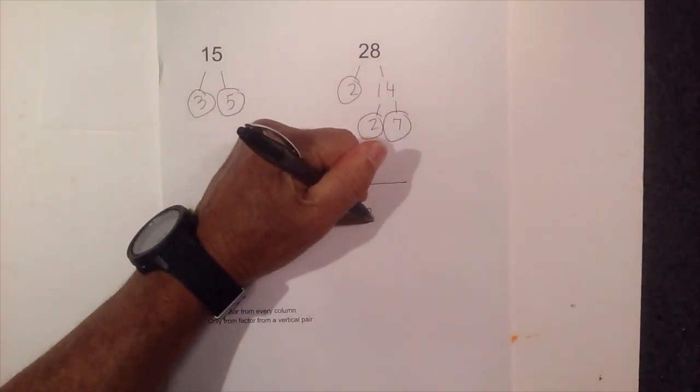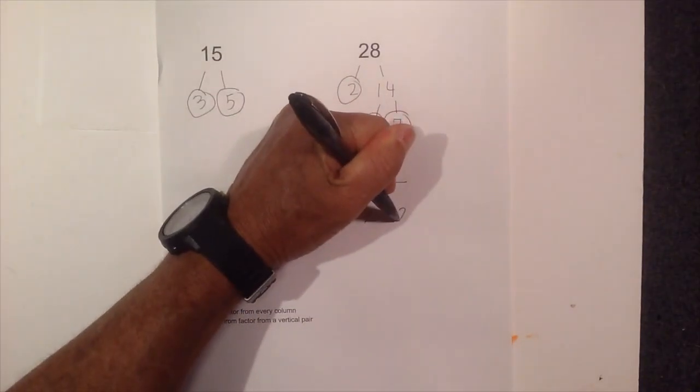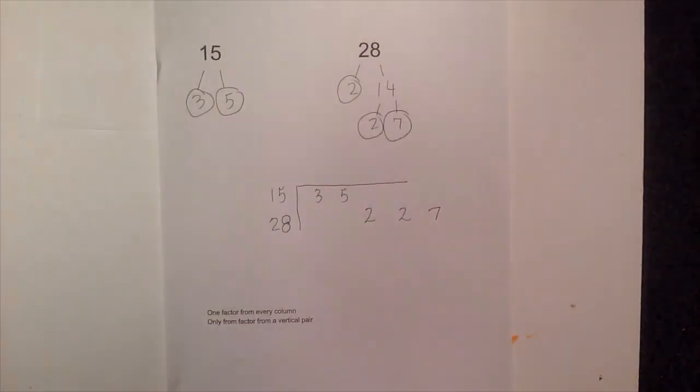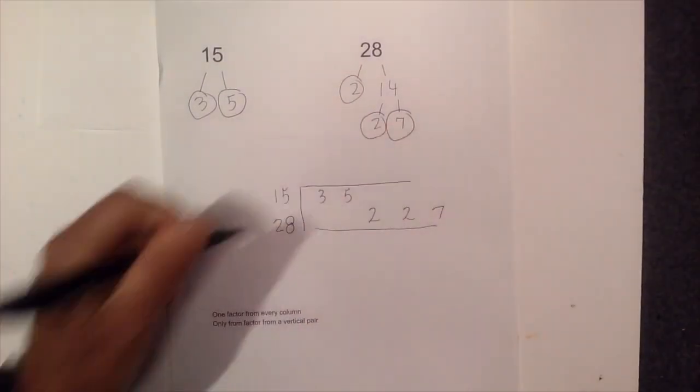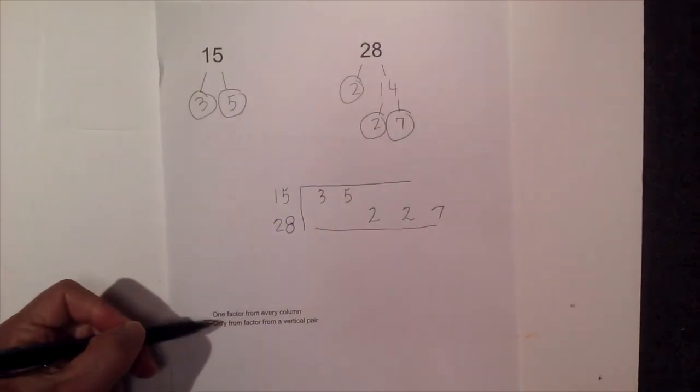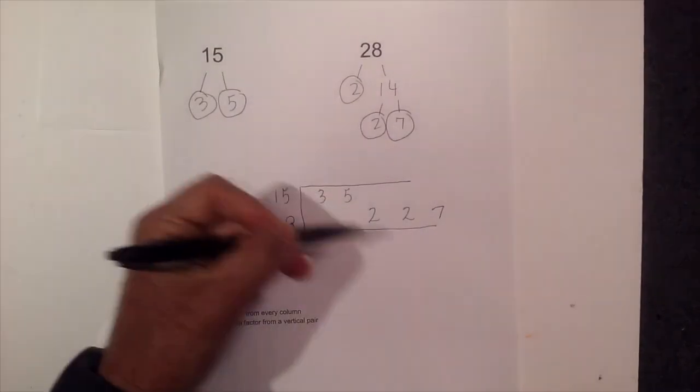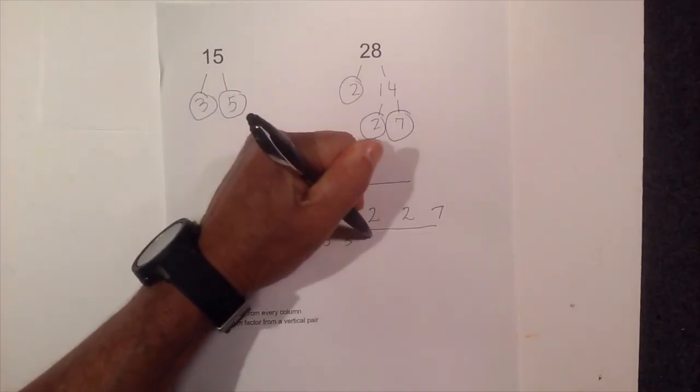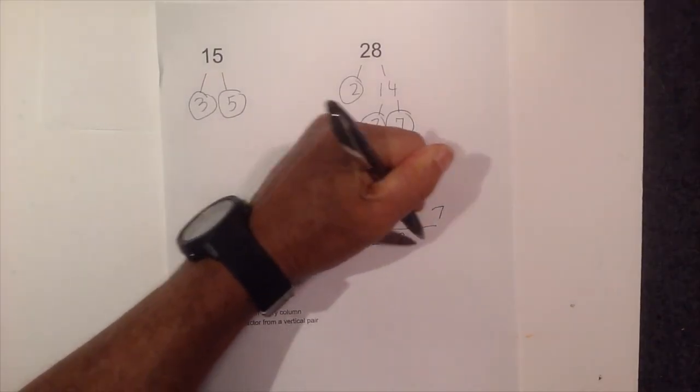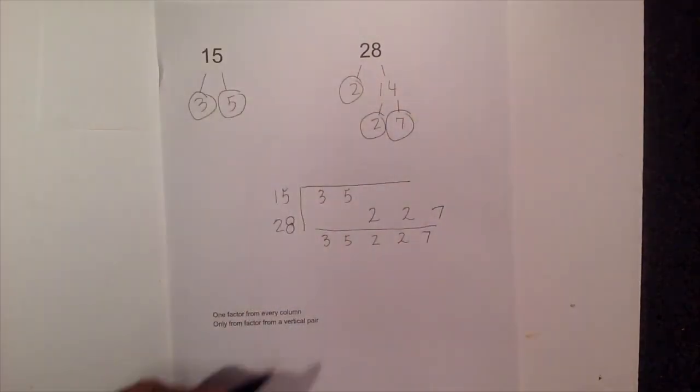So I am going to begin right here. So we have 2, 2, and 7. Remember my rules. Use one number from every column and only one factor from a vertical pair. I do not have any vertical pairs so it is going to be 3 times 5 times 2 times 2 times 7.